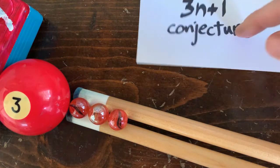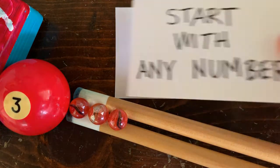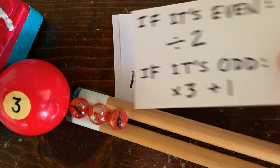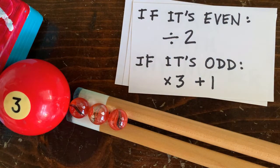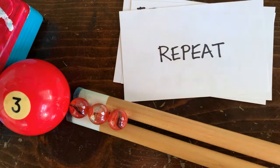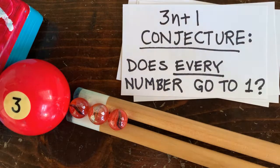The conjecture says start with any number. If it's even, cut it in half. If it's odd, multiply it by 3 and add 1, then repeat. The conjecture asks, does every number go to 1? Nobody knows.